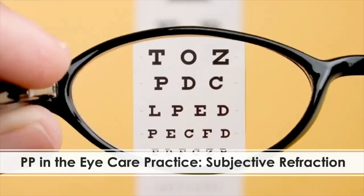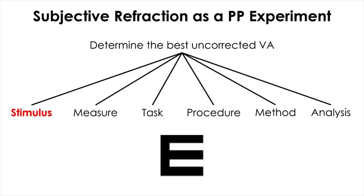Subjective refraction is one of the routine examinations performed by eye care professionals to determine the optimal lenses that will provide the patient with the best corrected visual acuity. The entire steps involved in subjective refraction are based on many psychophysical techniques and principles. Before refracting the patient, you first need to determine the patient's best uncorrected visual acuity using the acuity chart. In this case, the stimulus of choice is optotype.